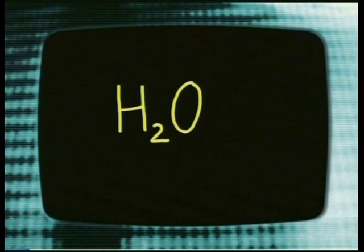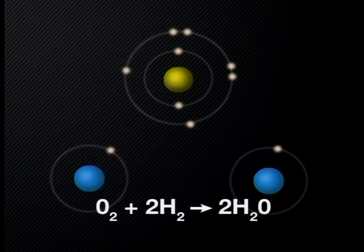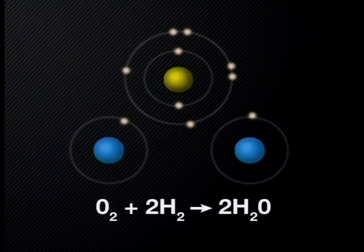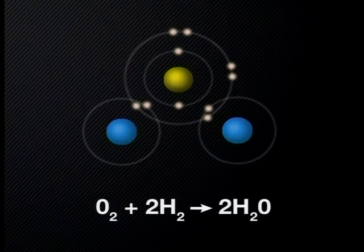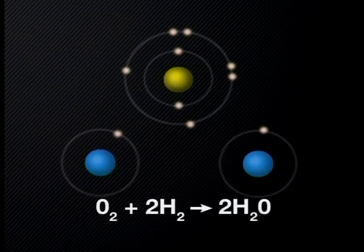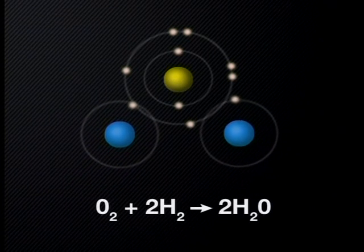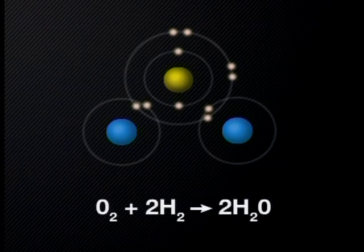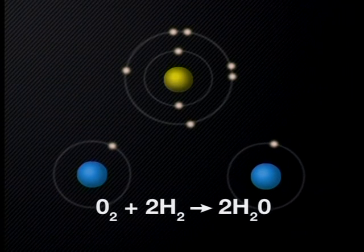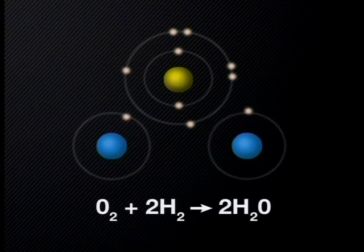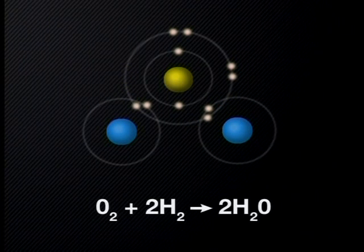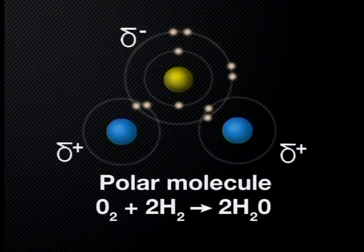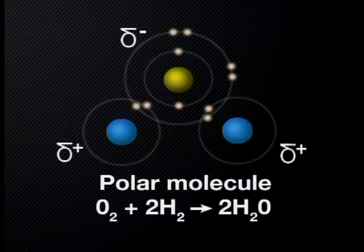Let's have a look at an animation to see how these water molecules form. Diatomic oxygen and hydrogen atoms react and bond to form water molecules. The oxygen and hydrogen pair share electrons to bond covalently, creating an angular molecule. The oxygen atom has a strong attraction to the shared electrons because it has more positively charged protons in its nucleus than hydrogen. This causes the oxygen end to be more negatively charged and the hydrogen side to be more positively charged. Because of this, we call the water molecule a polar molecule.